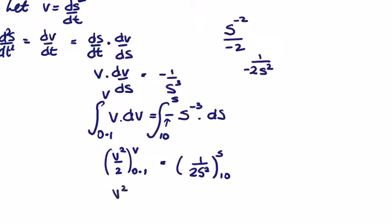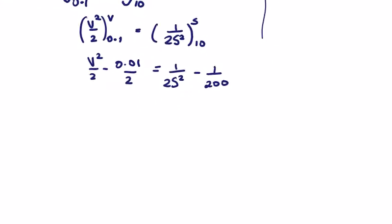So on the left we're going to get v squared over 2 minus 0.1 squared is 0.01 over 2, and these are the same. So we're going to get, multiplied by 2, we're going to get v squared is equal to 1 over s squared.